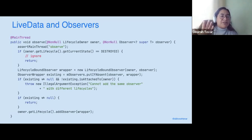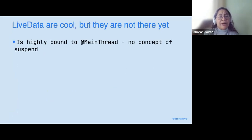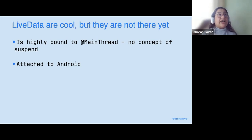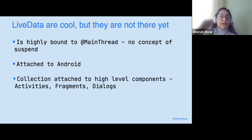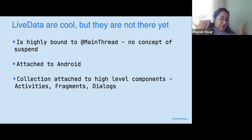So every time you are doing the observe function you are actually adding observers. You can add as many observers as you want. It's quite simple. LiveData is highly bound to the main thread. There is no concept of suspend functions — it happens on the main thread and needs to happen on the main thread. They are highly bound to Android. There are a lot of problems when trying to collect data from activities, fragments, and dialogues at the same time, especially when trying to make a huge collection of all attached observers to one activity that might have tons of fragments.